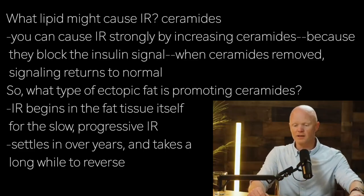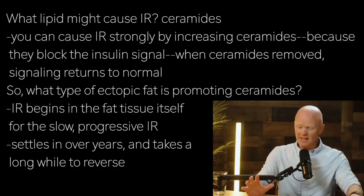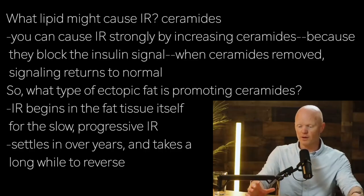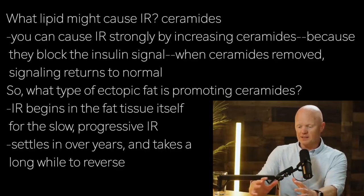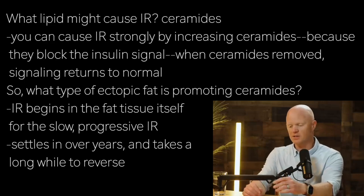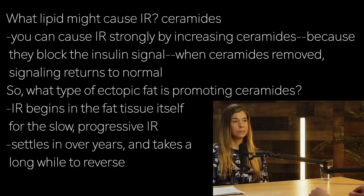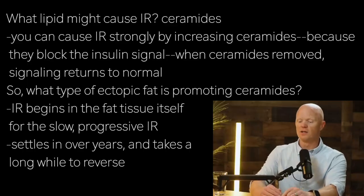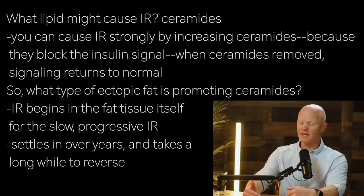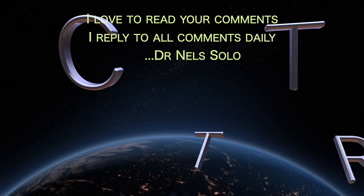Interestingly, all of those primary stimuli for fast insulin resistance induce ceramide biosynthesis and accrual. With slow insulin resistance, I still think it's appropriate to invoke fat — but by that, I mean fat tissue. Among the tissues where insulin resistance originates, whether muscle, liver, or fat, I'm very much an advocate of the fat-first focus when it comes to slow, progressive insulin resistance — the kind that settles in over years and may take weeks to months to reverse.